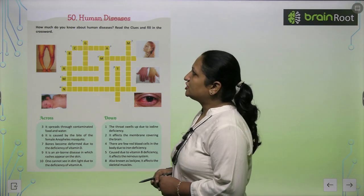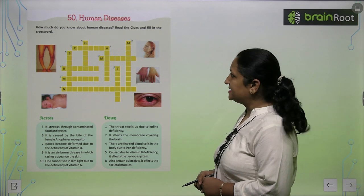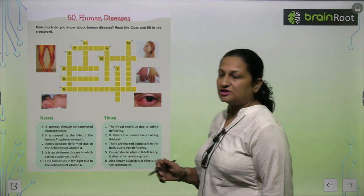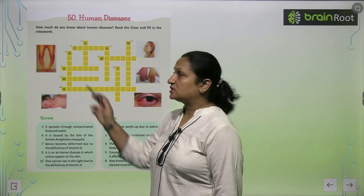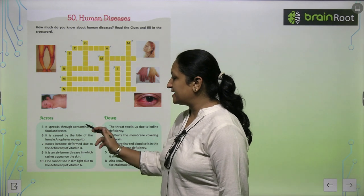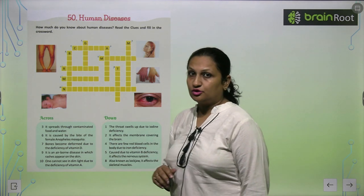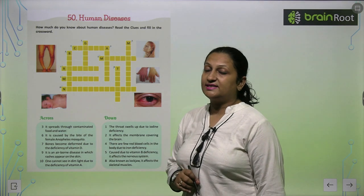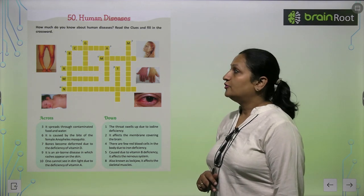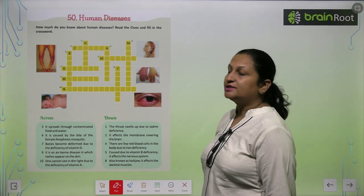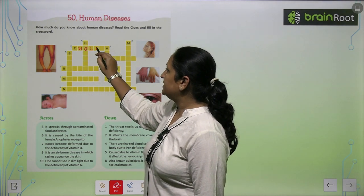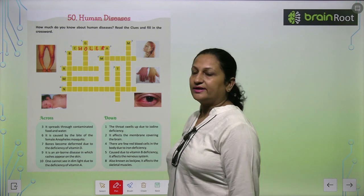How much do you know about human diseases? Read the clues and fill the crossword. See the first one — it's across, so we go left to right. It spreads through contaminated food and water. So which disease is this? The one that happens due to eating dirty food or drinking dirty water — that is Cholera. C-H-O-L-E-R-A, Cholera.